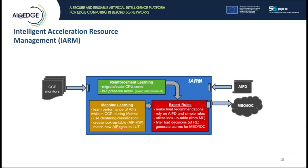IARM uses metrics from the ConnectCompute platform monitors and the AIF descriptor as inputs. Using internal mechanisms, it makes the decision for AIF placement or migration. IARM is structured to potentially include ML or reinforcement learning—for example, reinforcement learning will be used for the vertical and horizontal scaling of the CPU versions, while ML combined with accumulated knowledge will drive decision-making about which version should be used. The critical part is the expert knowledge component. The output of IARM is a JSON file which is sent through a REST API in response to the MEO.